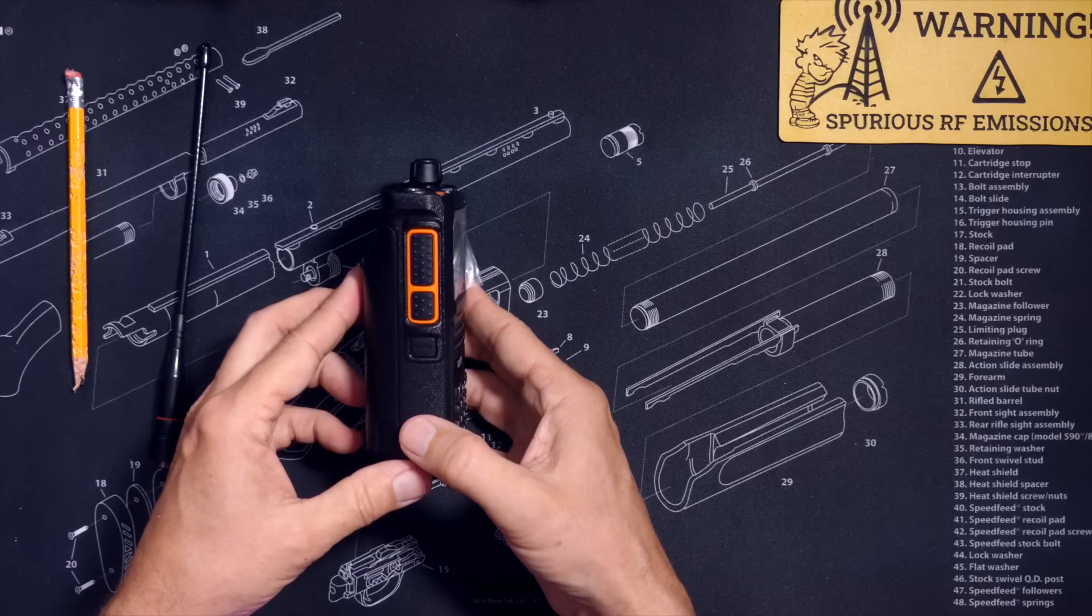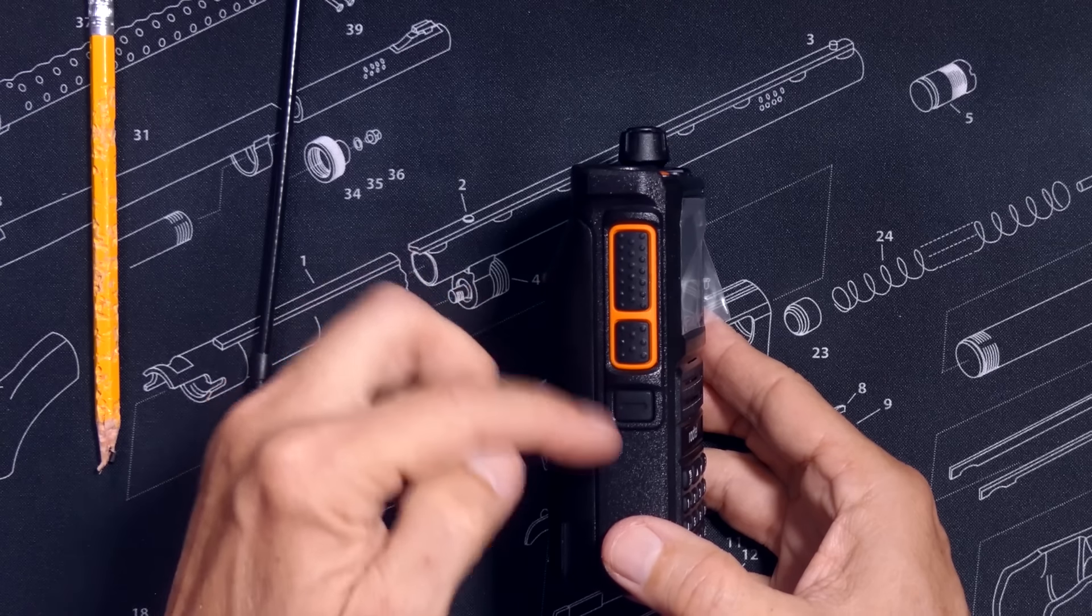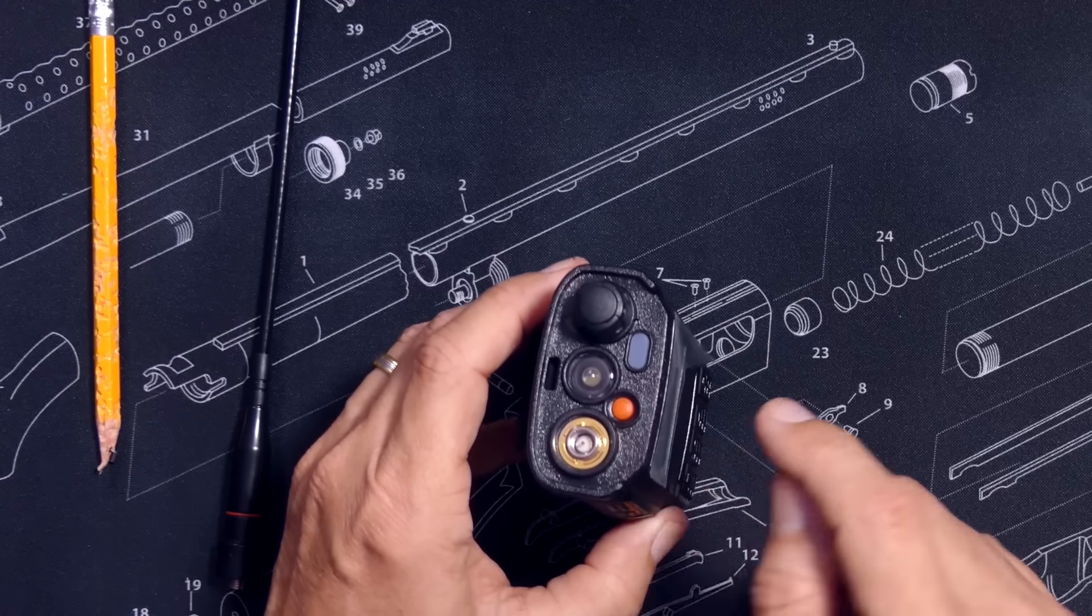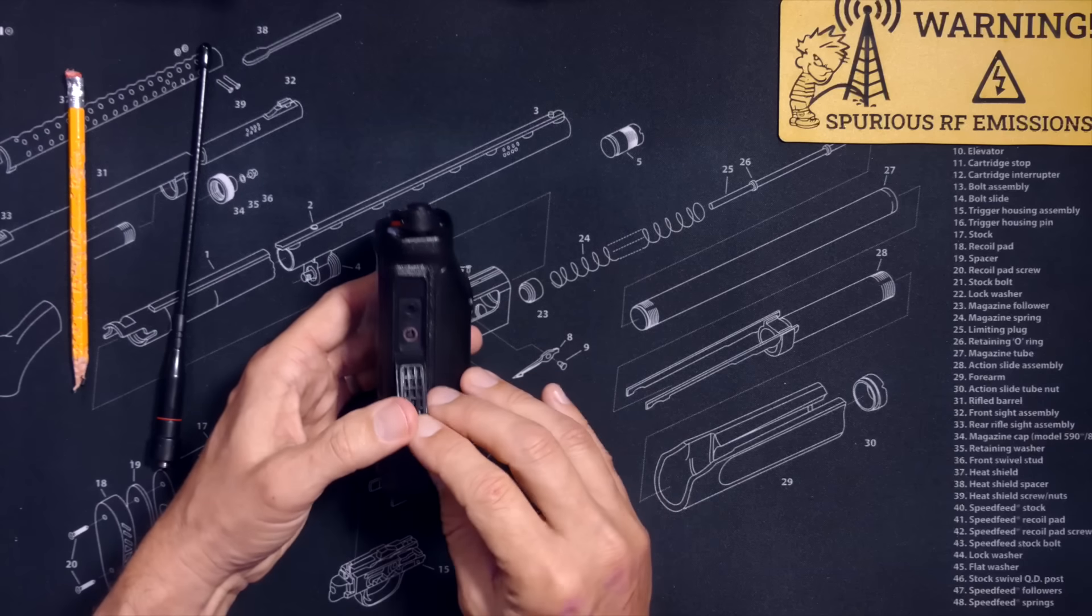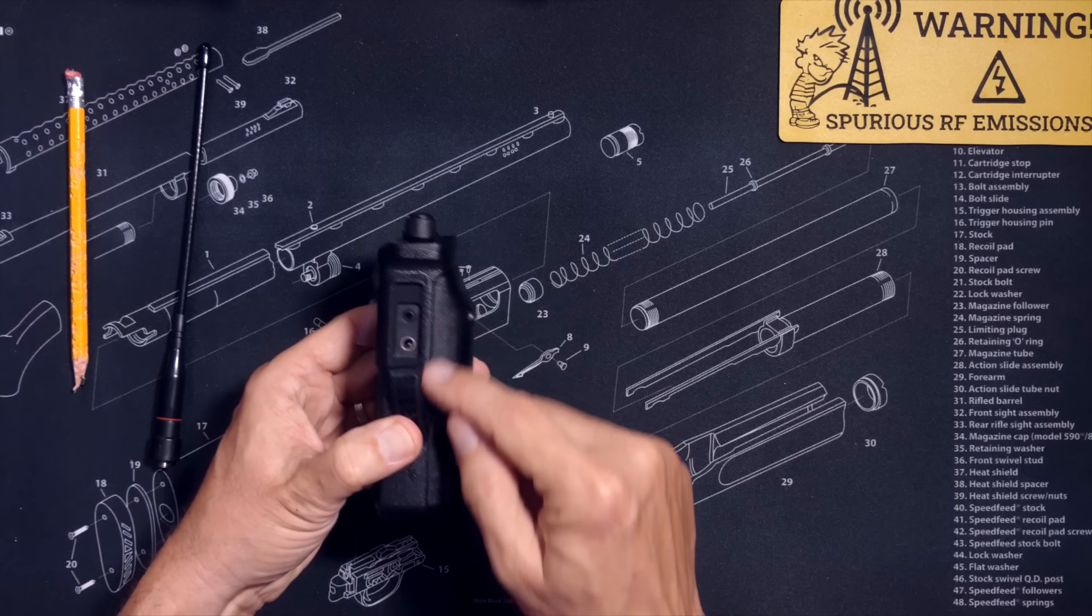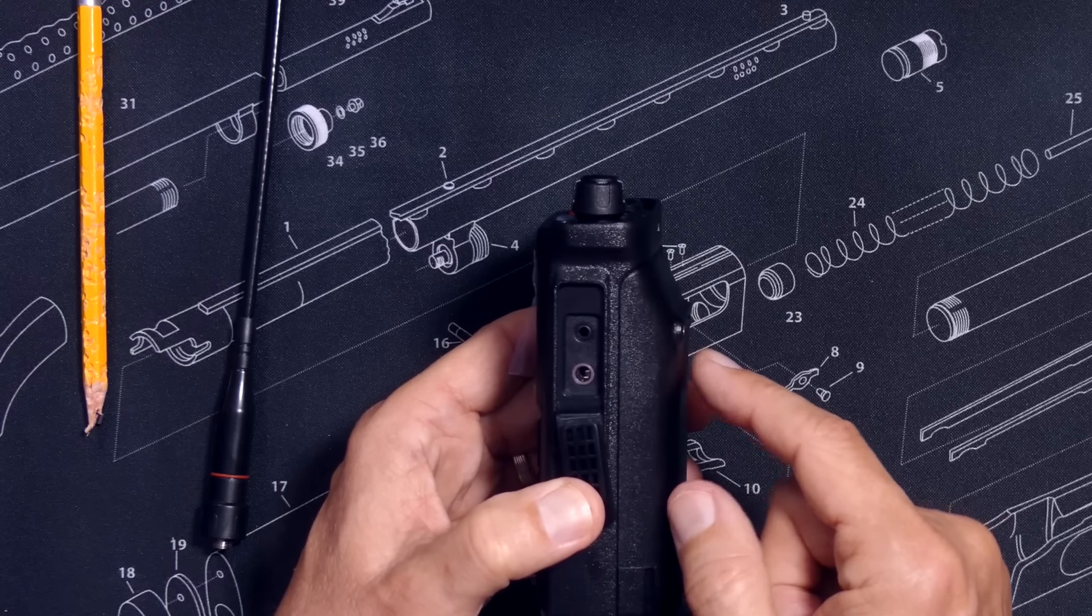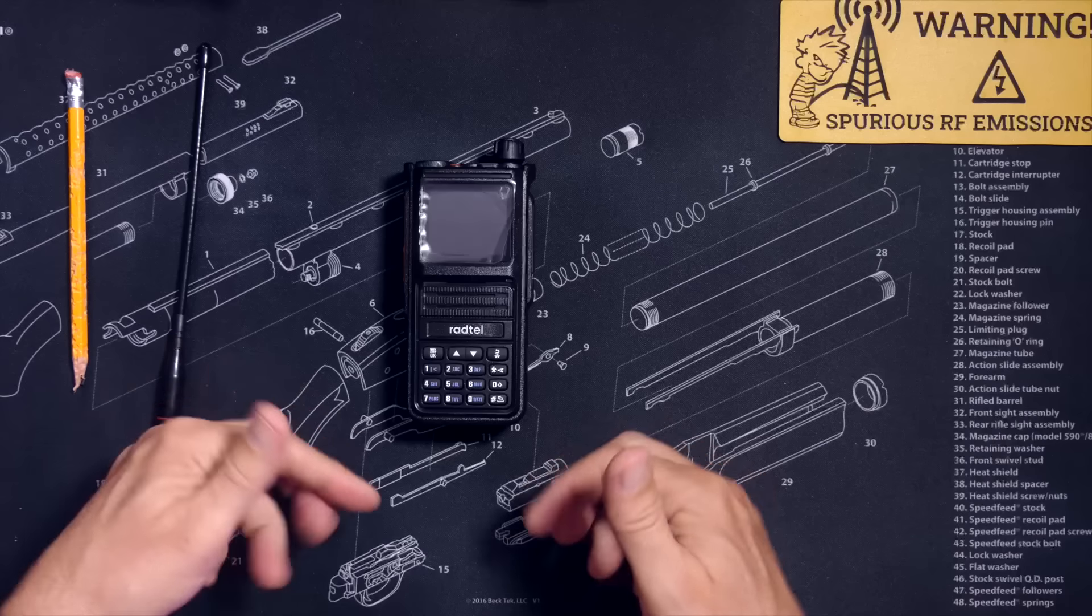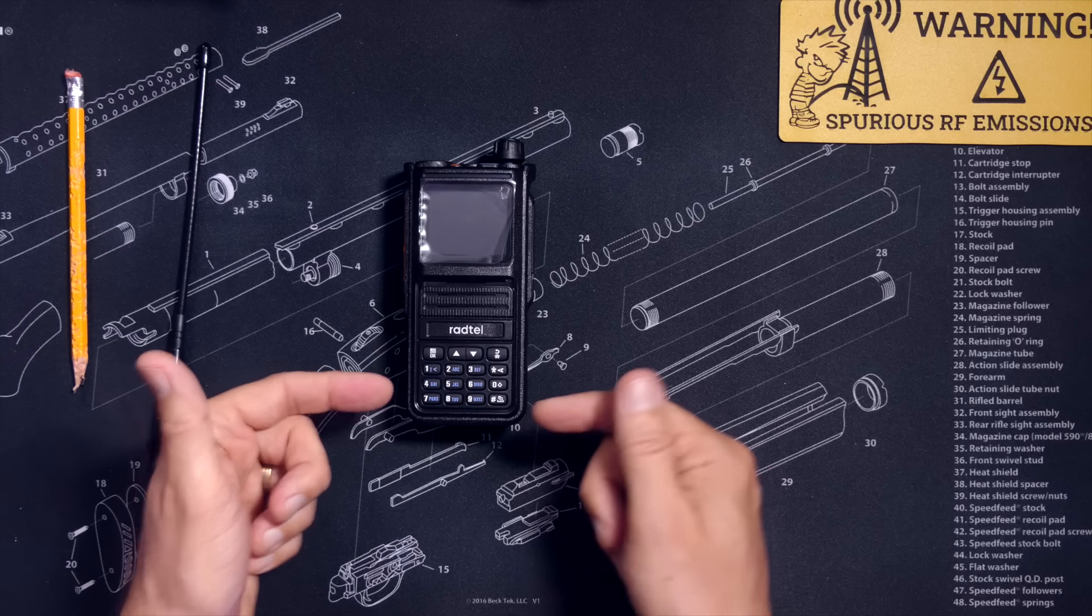On the side, you will find a push-to-talk button and two additional programmable buttons. The top button can also be programmed to do various other functions and features. On the other side, you will find a standard K1-type connector, the same as you find on a Baofeng UV-5R-type radio. And on the front, you will find all of the buttons that you would expect to find on a walkie-talkie ham radio.